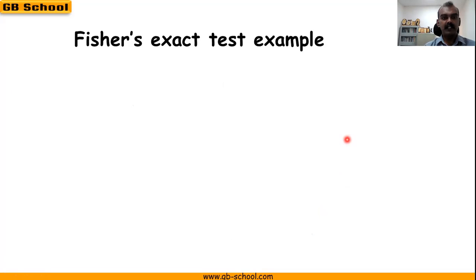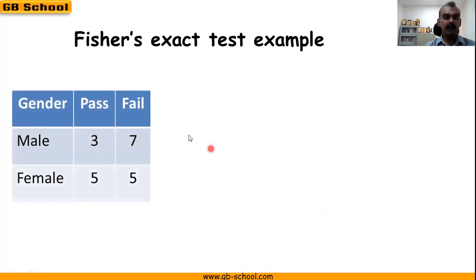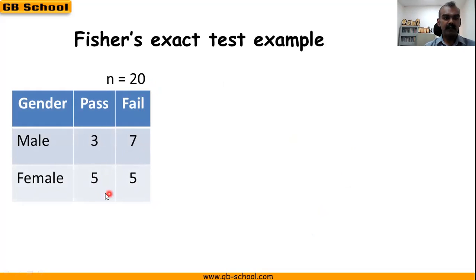Let's go with an example — the same table where we have 20 samples, 10 males and 10 females. 3 males passed, 7 failed, 5 females passed, 5 failed. We have to find out the association between gender and knowledge.